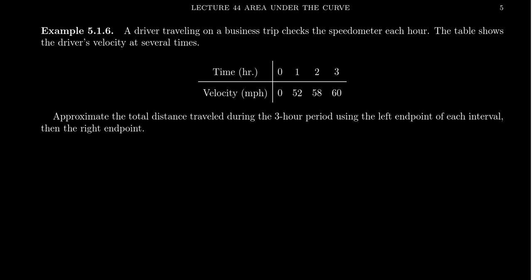And the thing we have is essentially the following: we only know a little bit about the function. We know what happens at zero, one, two, and three of this velocity function. And we know it's going to be here, zero, 52, 58, and 60. And that's all we know about the function. We just have these three dots. How do we estimate the area under the curve? That is, how can we approximate the total distance?